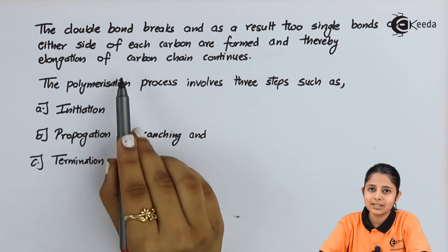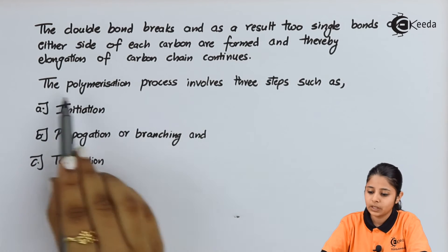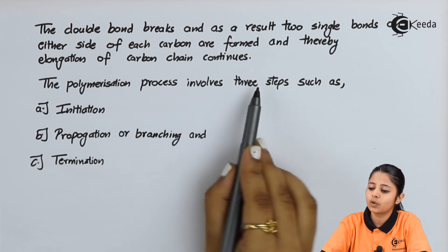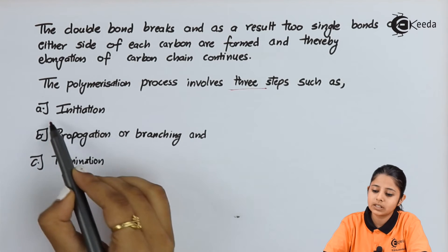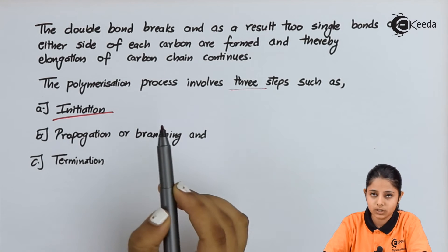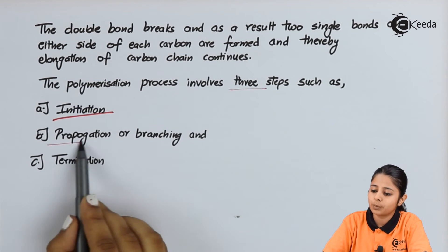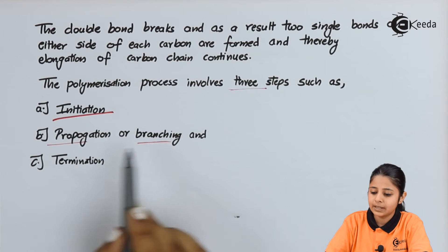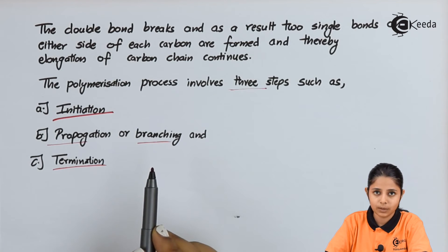This entire process is divided into three steps. The first one is the initiation step, the second one is the propagation or branching step, and the third one is the termination step.